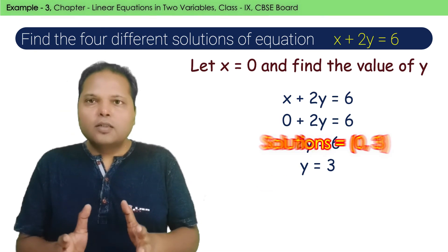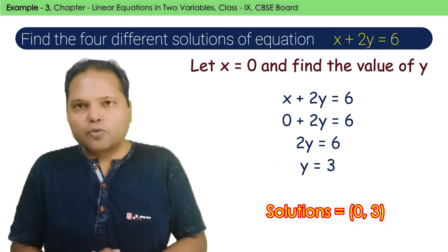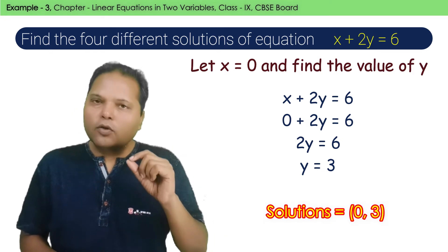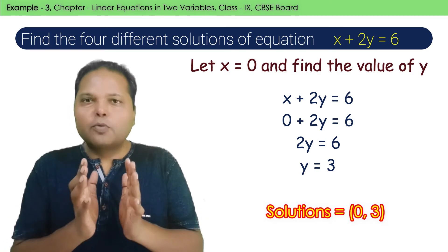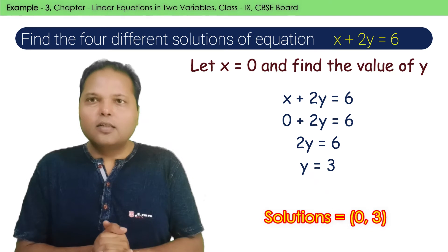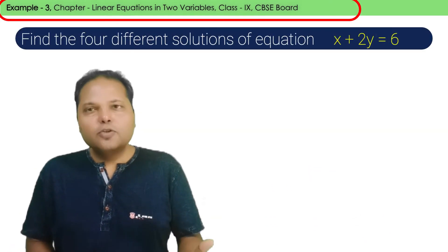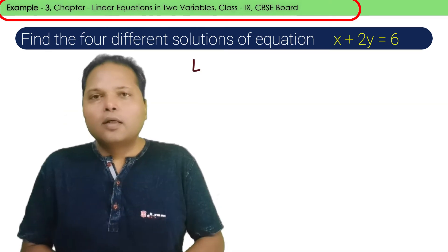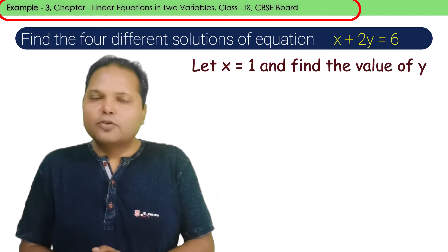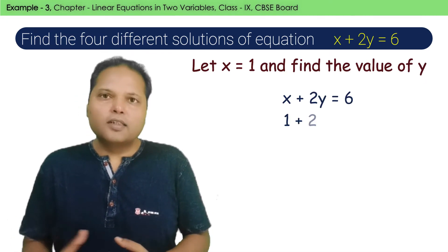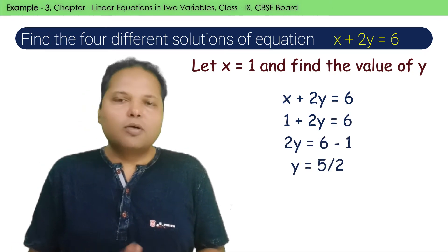In this way, we assume the value of one variable and identify the corresponding value of the other variable, and this becomes our solution. Now we identify another solution. In the next solution, let's assume x is equal to 1. We will calculate the value of y corresponding to x. When we put the value of x into the equation, the value of y comes out to be 5 upon 2. Thus, the solution will be 1, 5 upon 2.